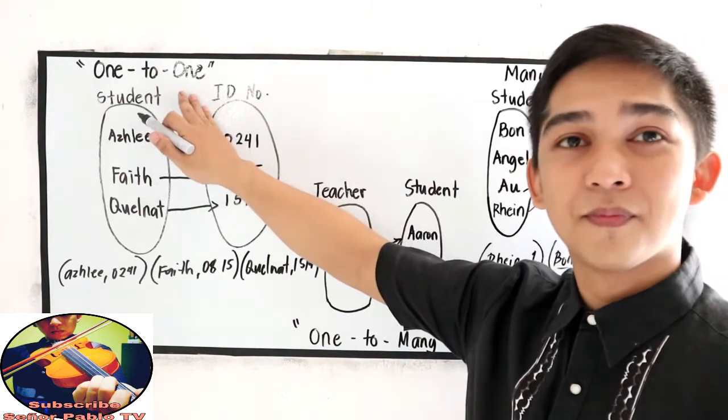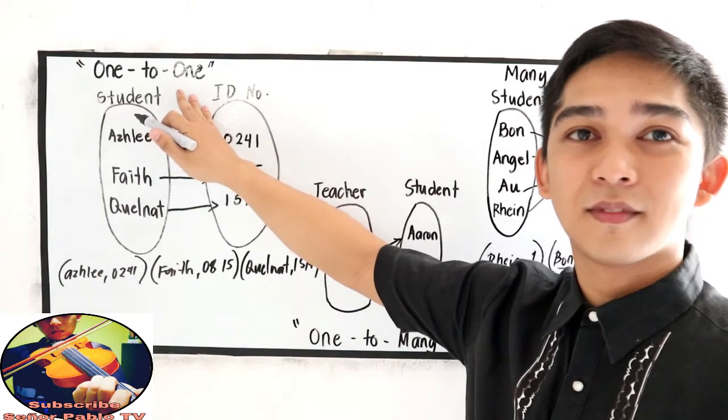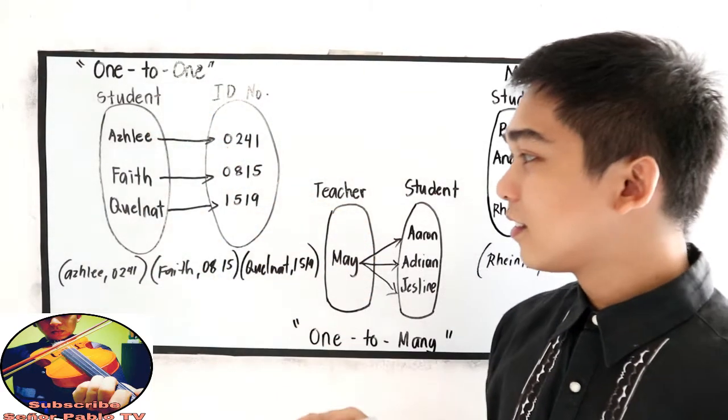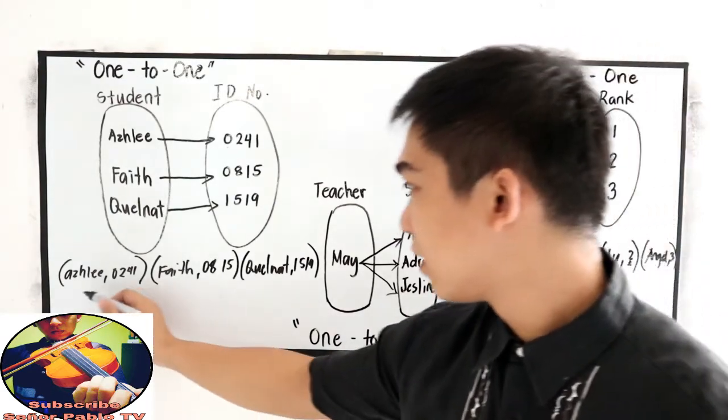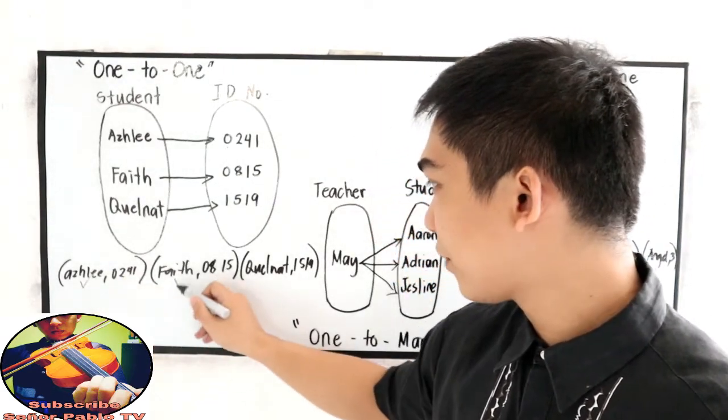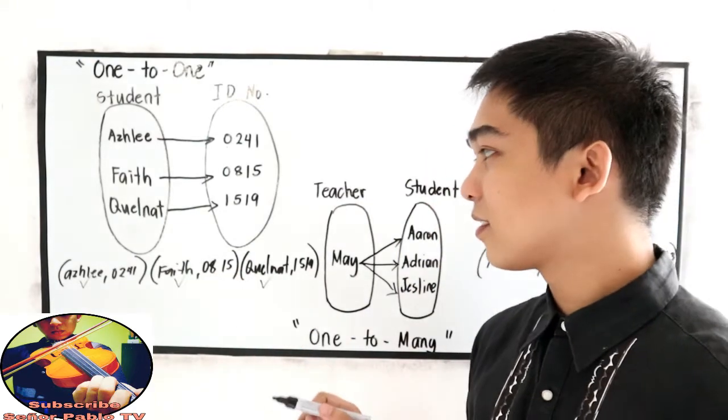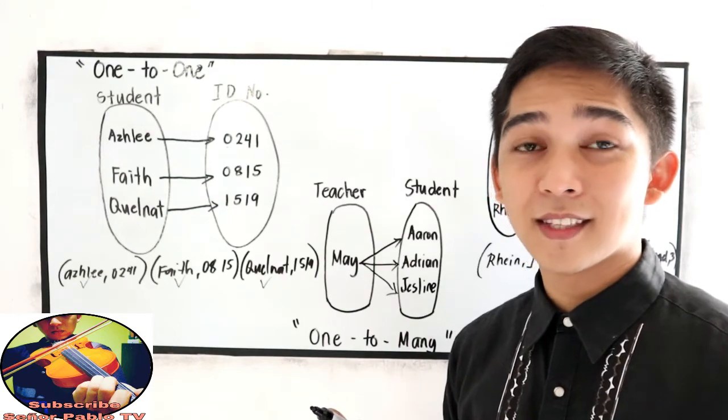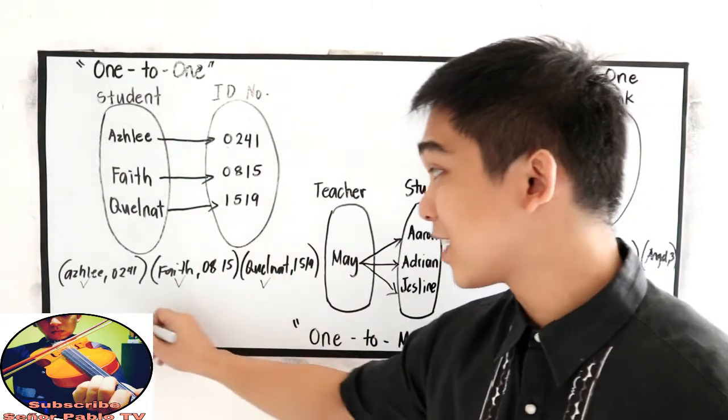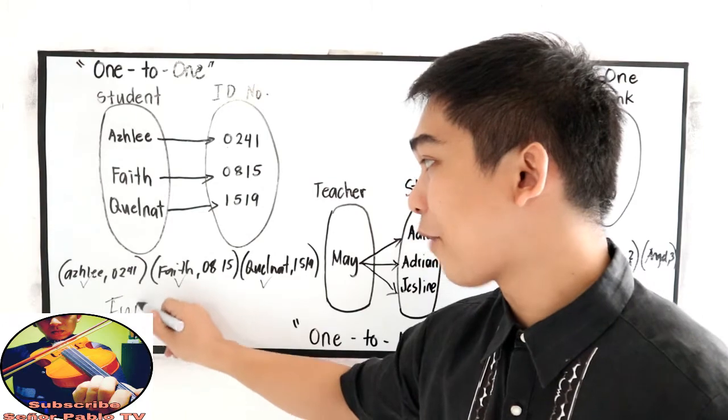One-to-one, function or not? Let's check the domain. So, the domain must not be repeated. So, for Ashley, Faith, and Kelna. No element in our domain is repeated. So, this is, one-to-one is a function.